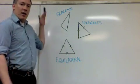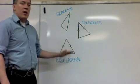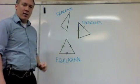Again, fairly simple. Scalene, none of the sides are equal. Isosceles, two of the sides are equal. Equilateral, all three are equal.